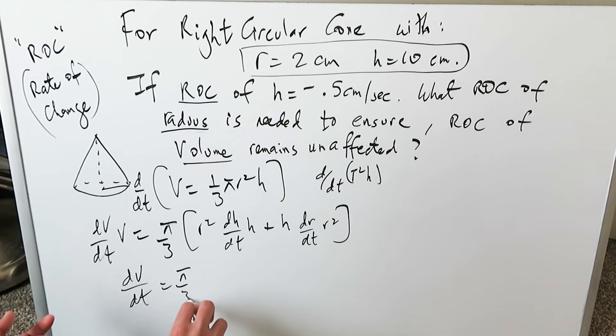You have π over 3 over here. The derivative of h is just a one, it will go away. So you get r² dh/dt plus h times 2r dr/dt. You know that, and then dr over dt.